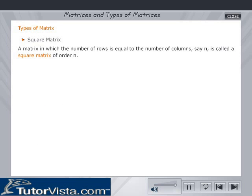A matrix in which the number of rows is equal to the number of columns, say n, is called a square matrix of order n. A equals matrix 2, 3, 8, 1 is a square matrix of order 2.